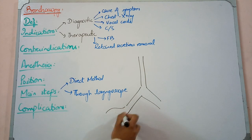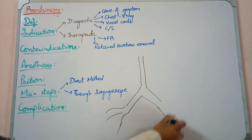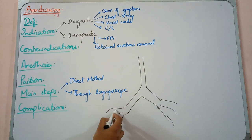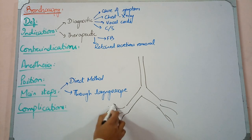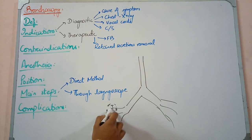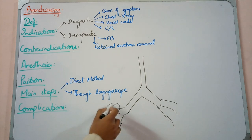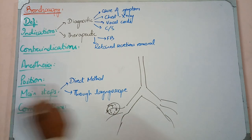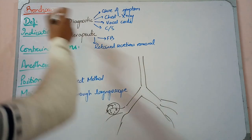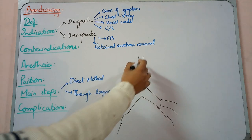Then the bronchi divide further. So when we have to see a portion of the lung — suppose there are many consolidations in that portion, or that portion has just collapsed — and I want to see it directly, that is why we do bronchoscopy.